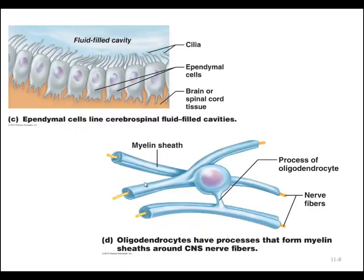Another type of glial cell are the ependymal cells, found bordering the brain where they form a protective barrier and secrete cerebrospinal fluid. We find ependymal cells in the ventricles of the brain, and their job is to produce cerebrospinal fluid. The fluid is then moved throughout the cavity with the help of the many cilia found on the ependymal cells.